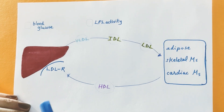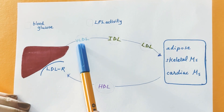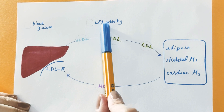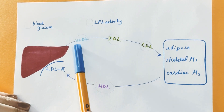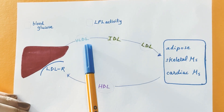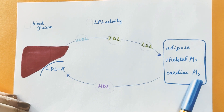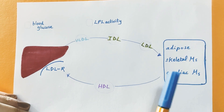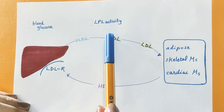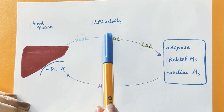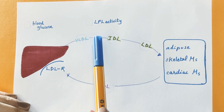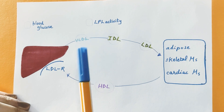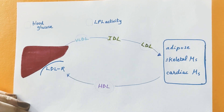Point number three: normally LDL is metabolized by lipoprotein lipase enzyme to liberate its triglyceride content to be utilized by the peripheral tissues. This is the step that fibrates act on to reduce triglyceride levels in cases of hypertriglyceridemia.